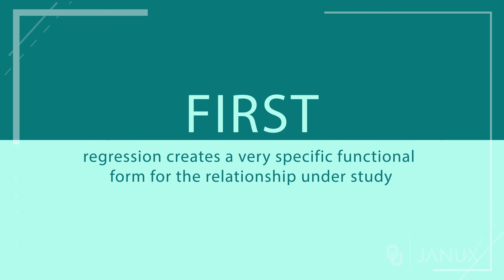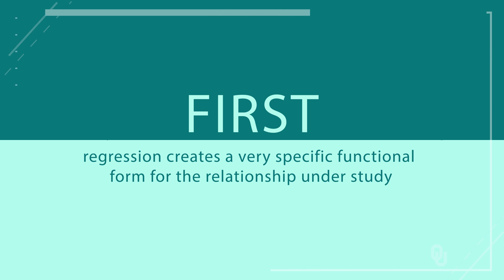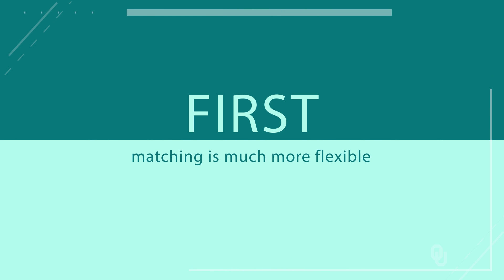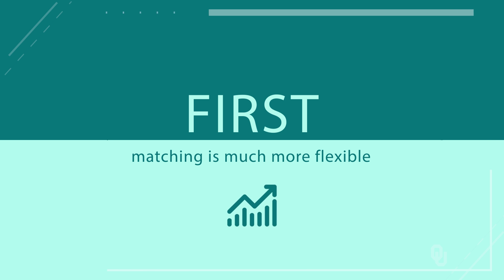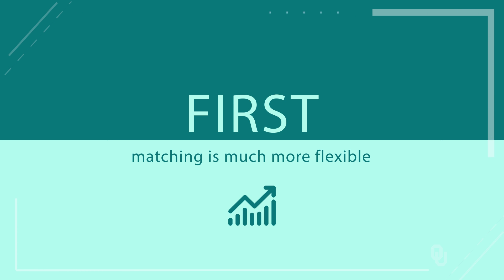Let's discuss how propensity score matching would differ from just running a regression that also controlled for observable factors. In other words, if we estimated the effect of an exchange rate regime on inflation in a regression framework with a bunch of controls, would we be getting the same result? Well, not really. One big difference is that regression creates a very specific functional form for the relationship under study. Matching is much more flexible, so we might find better results using matching than regression if we are not correctly specifying the form of the regression equation.